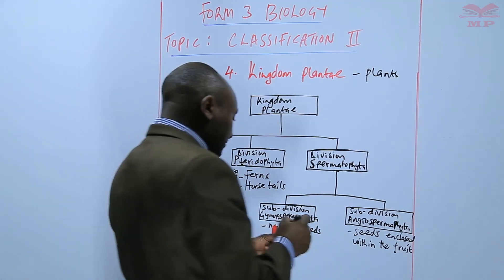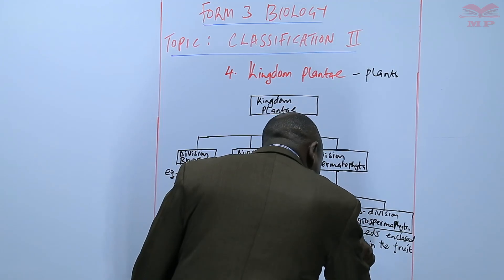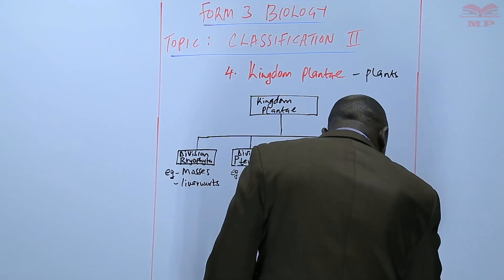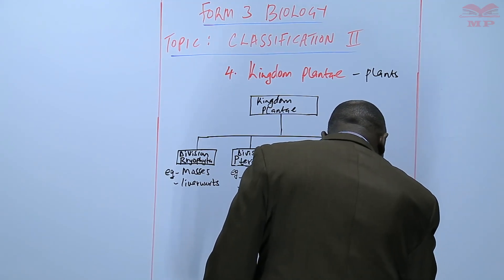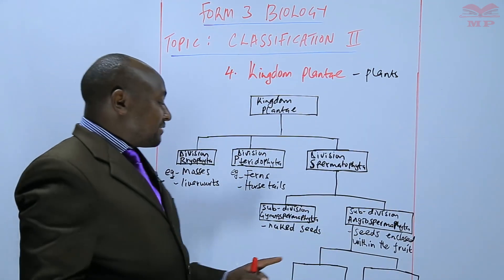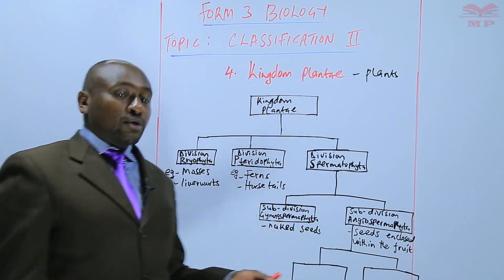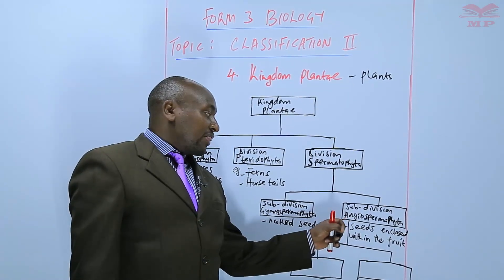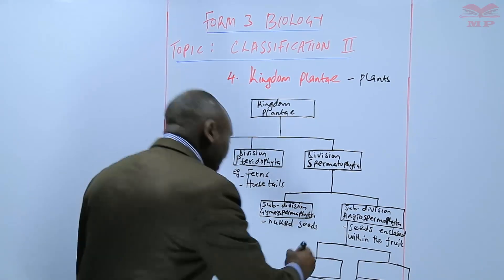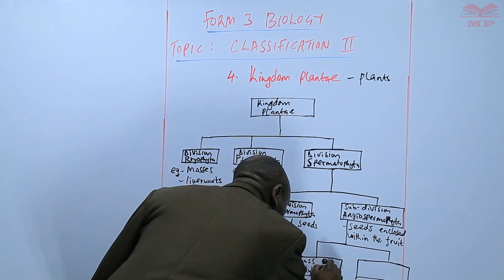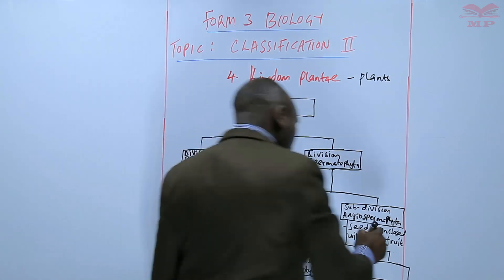The Angiospermatophyta is divided further into classes. There are two common classes: Class Monocotyledonidae and Class Dicotyledonidae. That is why we have the dicotyledonous plants and the monocotyledonous plants. These are part of the Angiospermatophyta — Class Dicotyledonidae and Class Monocotyledonidae.